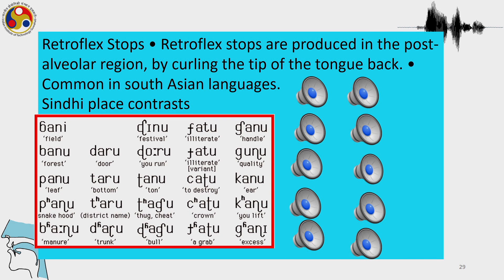Those are retroflex sounds produced by curling the tip of the tongue in such a way that the back of the tip touches the alveolar region, the post-alveolar region.